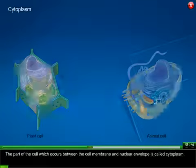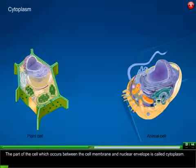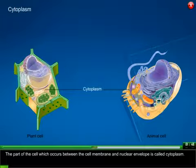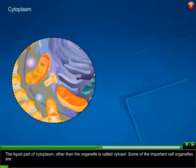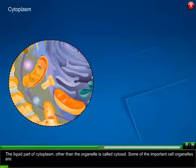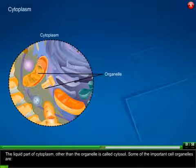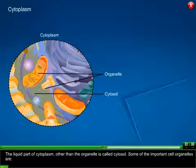Cytoplasm: The part of the cell which occurs between the cell membrane and nuclear envelope is called cytoplasm. The liquid part of cytoplasm, other than the organelles, is called cytosol. Some of the important cell organelles are: